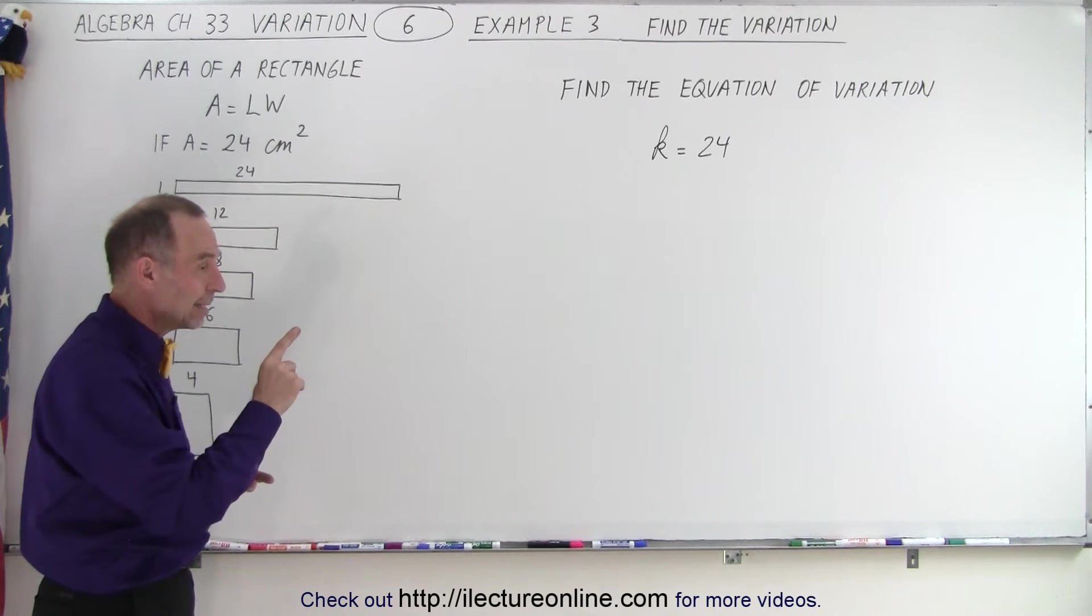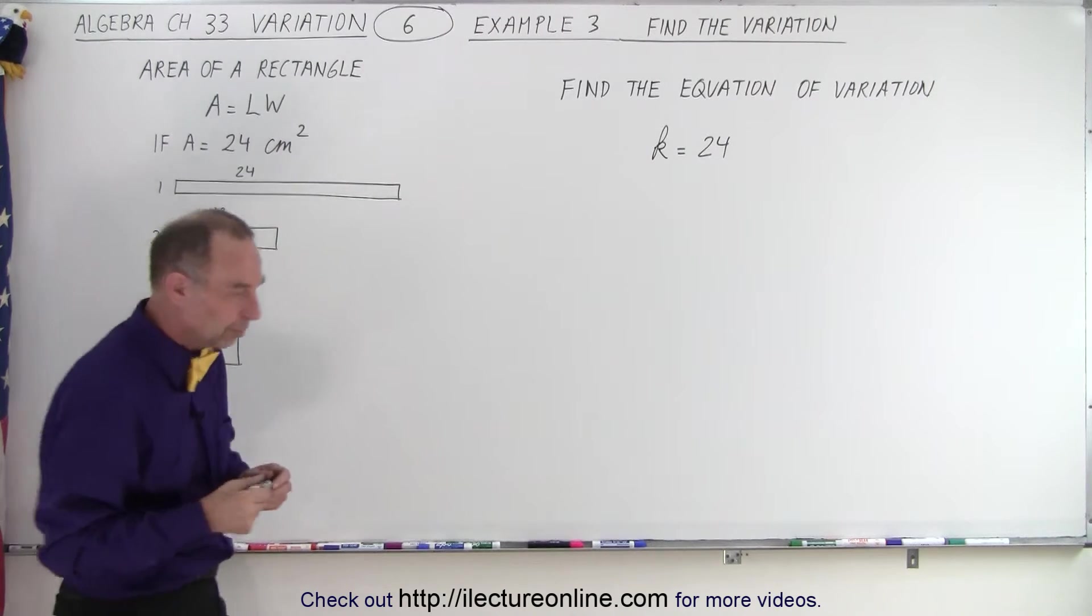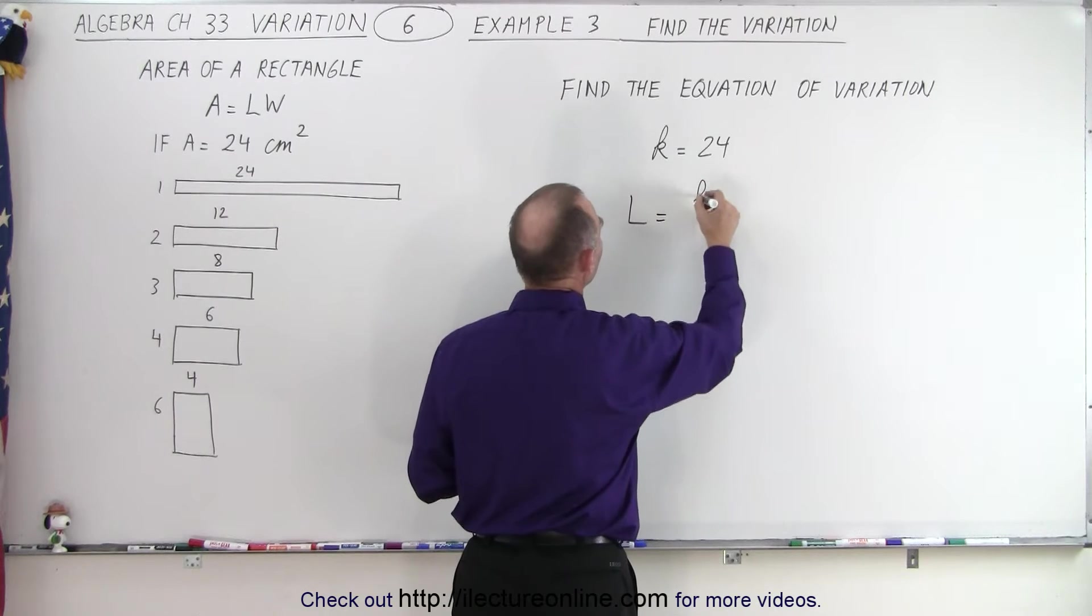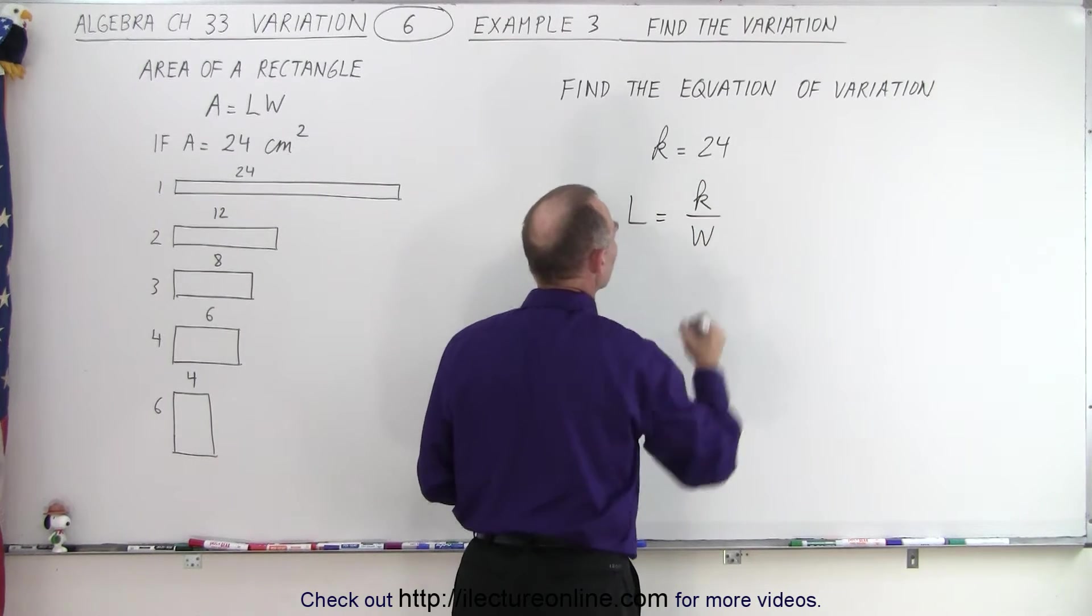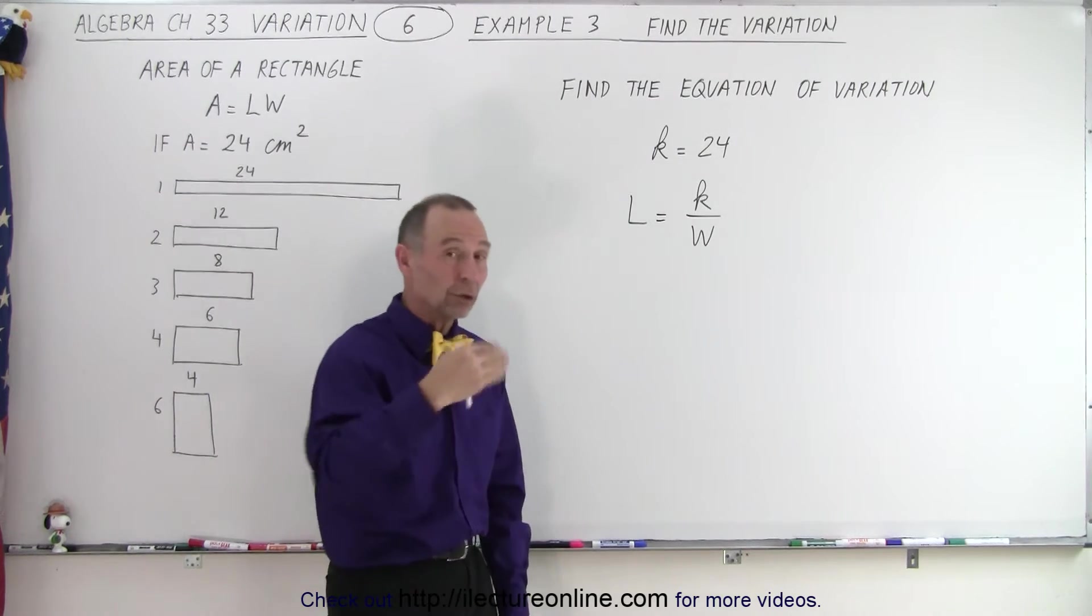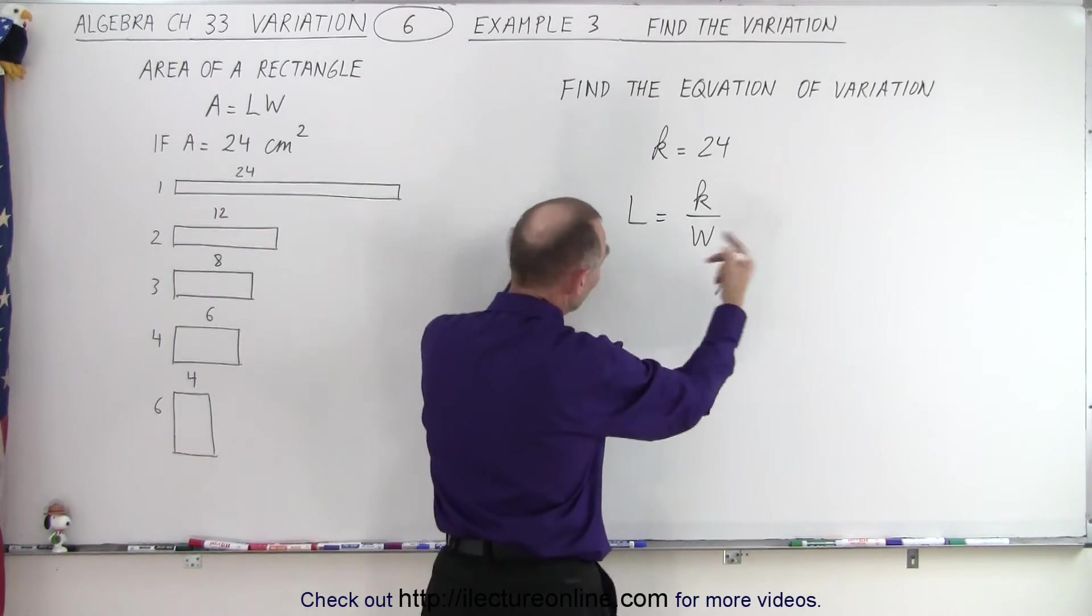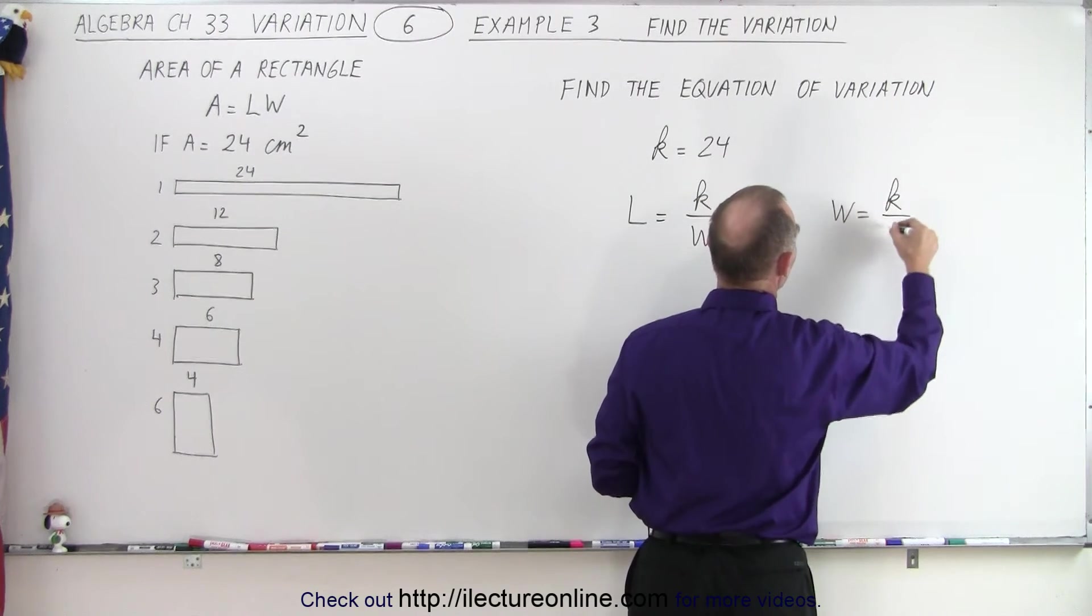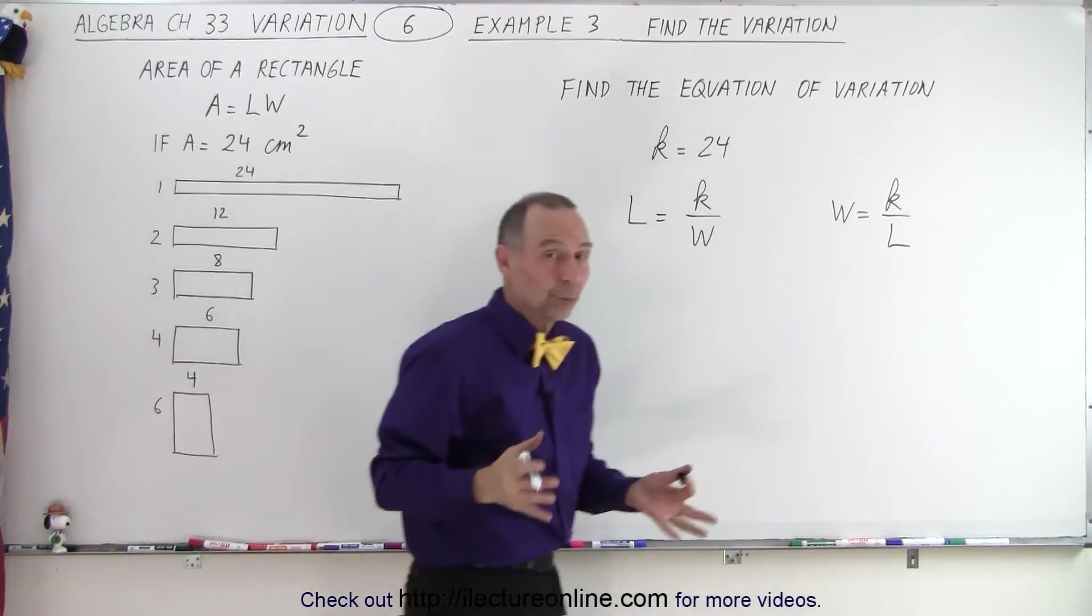And now that we have k and there's an inverse relationship, that means that we can write that L is equal to k over W. Because now we realize an inverse relationship, as one gets bigger the other one gets smaller, we have to write it like this. We could also write it as width is equal to k divided by L. Either one will work.